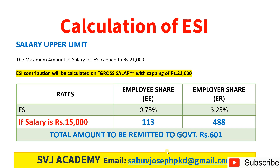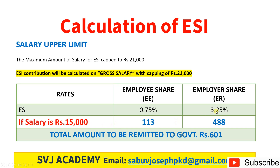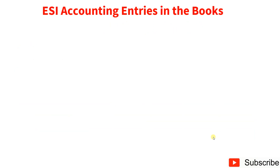For calculating ESI contribution, the maximum amount is capped at Rs. 21,000. ESI contribution is calculated on gross salary — unlike EPF which uses basic plus DA, here the entire gross salary is considered. The employee has to give 0.75% and the employer has to give 3.25%. For a salary of Rs. 15,000: employee contributes 0.75% × 15,000 = Rs. 113; employer contributes 3.25% × 15,000 = Rs. 488. Total ESI remittance: Rs. 601.